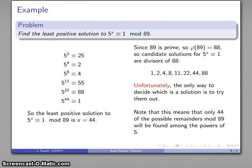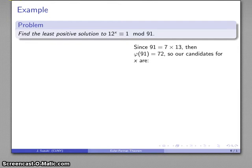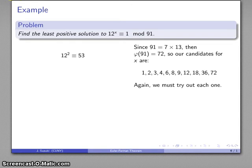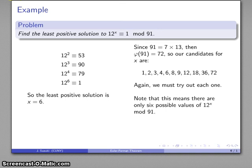Let's try another problem: 12^x ≡ 1 mod 91. Now 91 is not prime, but 91 = 7 × 13, so φ(91) = 6 × 12 = 72. The candidate solutions are the divisors of 72. Testing each, the least positive solution is x = 6, since 12^6 ≡ 1 mod 91. This also means there are only 6 distinct remainders when raising 12 to a power mod 91, which will become important later on.